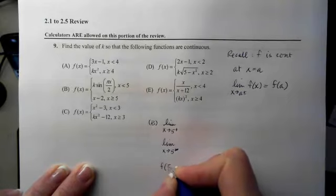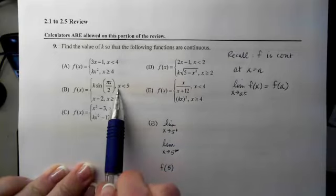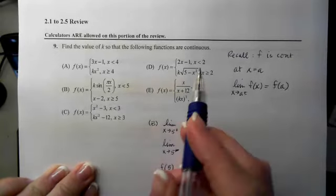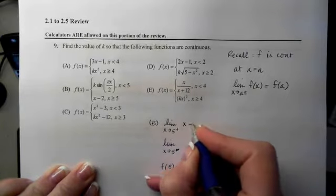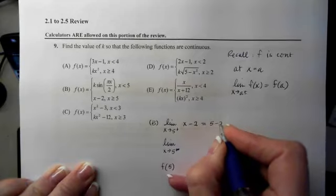When we plug 5 in. So if we're approaching 5 from the right-hand side, that means values of x will be a little bit bigger than 5. We can see that belongs to this bottom branch, x-2. If I plug 5 in, I will get 5-2 or 3.